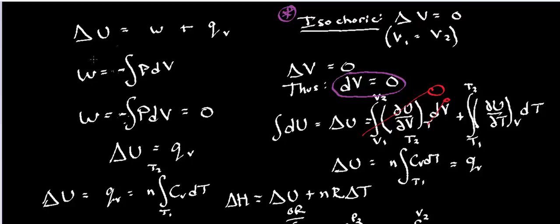So when we look at the definition of work, negative integral of PdV, I don't care what the bounds are. If you wanted to say it like this, it's V1 to essentially V1, but dV is zero. So this is zero. The whole integral goes to zero, so the work is zero. No PV work for an isochoric process.